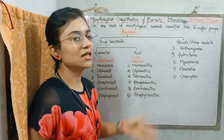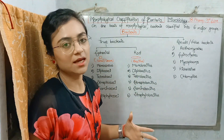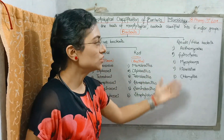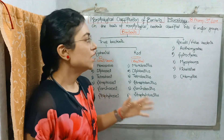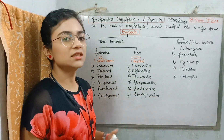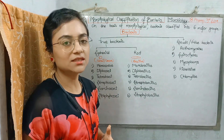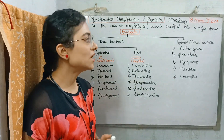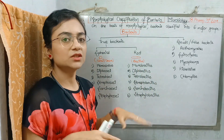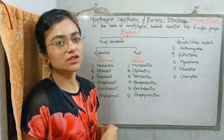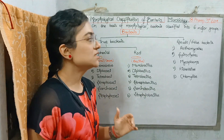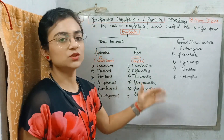Bacteria are mainly divided in two aspects. One is True Bacteria, and the other is Pseudo or False Bacteria. True Bacteria is defined by the shape of bacteria, whereas Pseudo or False Bacteria is not identified from the shape of bacteria but from the functions of bacteria. Therefore, it is called false or pseudobacteria.